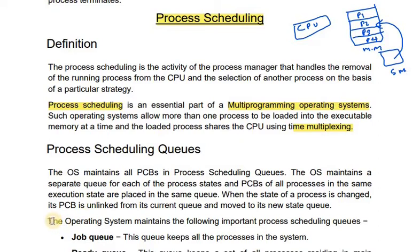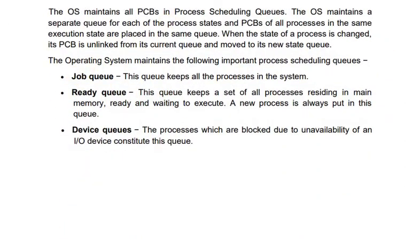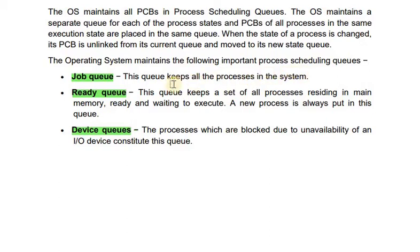We are going to discuss different types of queues. The operating system maintains the following important process scheduling queues: job queue, ready queue, and device queue. The job queue keeps all the processes in the system. The ready queue keeps a set of all processes residing in main memory, ready and waiting to execute. The device queue contains processes which are blocked due to unavailability of an I/O device.